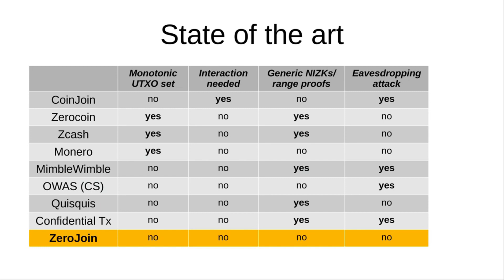Let me quickly summarize the current state of the art and why we need a new protocol. There are four major parameters I am going to consider regarding efficiency and scalability. The first is whether the protocol requires a monotonic UTXO set. The UTXO set must be stored in memory for a full node to verify transactions — it is not the blockchain, which is stored on disk. If a protocol requires the UTXO set to increase monotonically, meaning its size only increases, then this has scalability issues. Certain privacy protocols actually require this property.